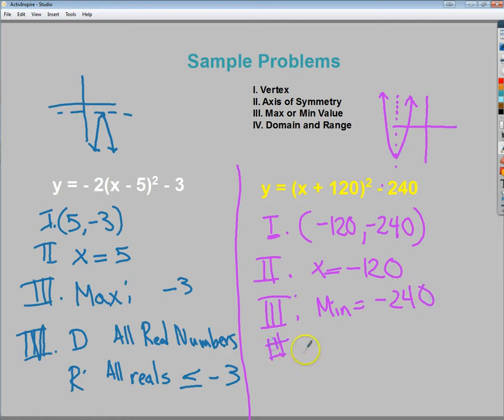And then for number four, my domain is, of course, all real numbers, and my range would be everything, essentially, above negative 240. So I would say all reals, or all real numbers, greater than or equal to negative 240. And that's supposed to be a four, not a nine. And that's it. So that's how you set them up.